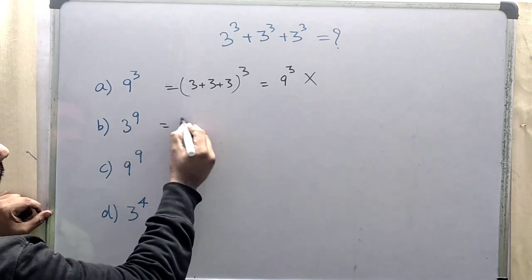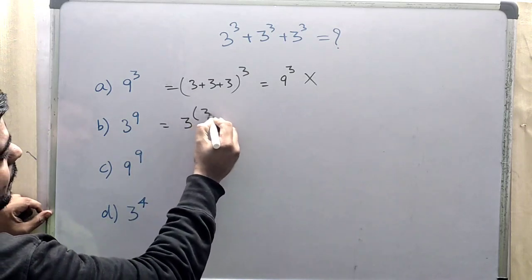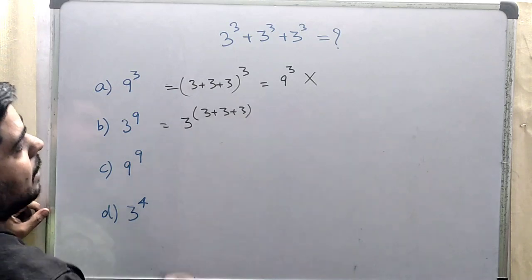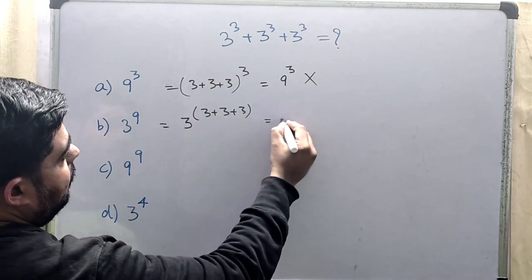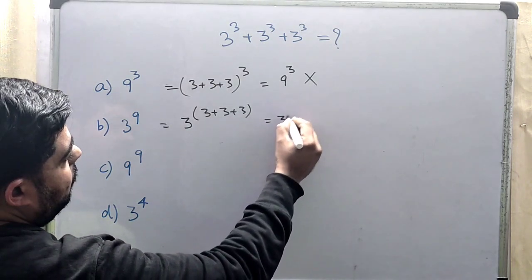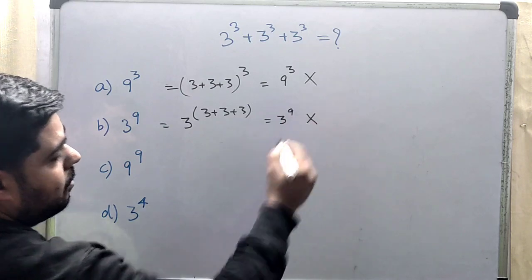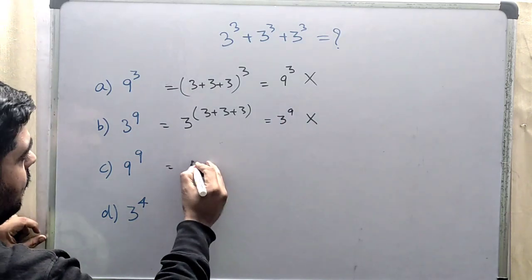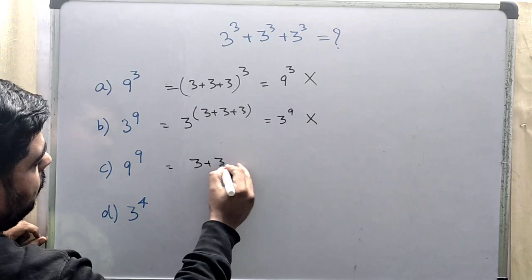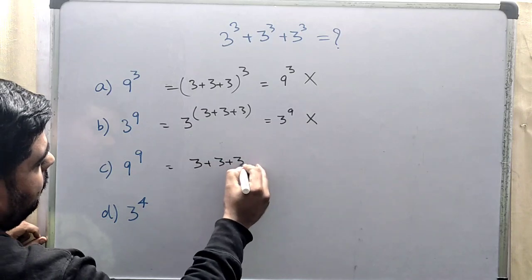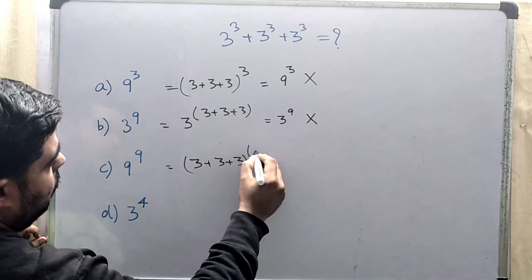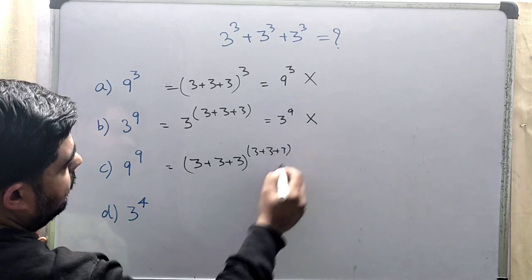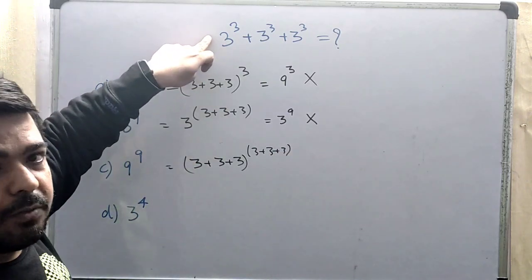We will check this one. This can be written as 3 plus 3 plus 3, which will come in the form of 3 to the power 9. This is also not our answer. Now we will check this one: 3 plus 3 plus 3 whole to the power 3 plus 3 plus 3, which is not in the form of this.